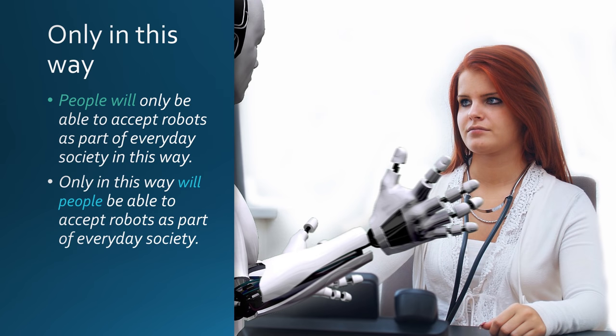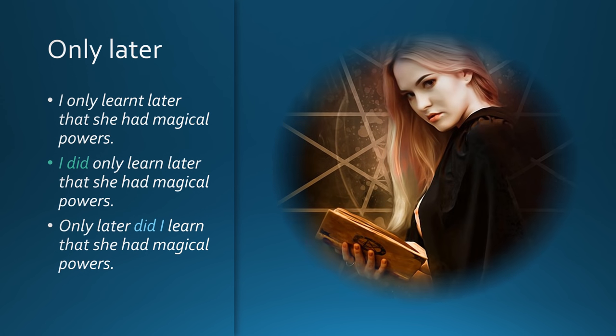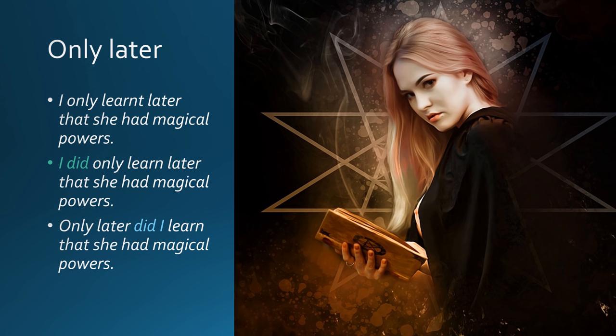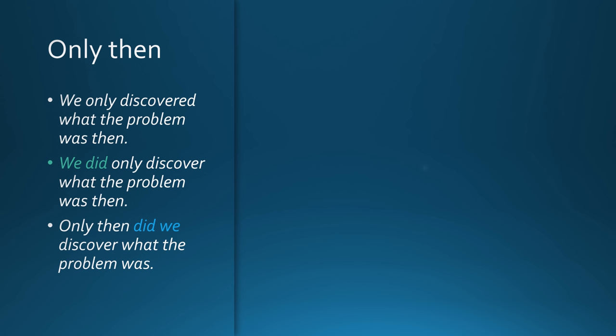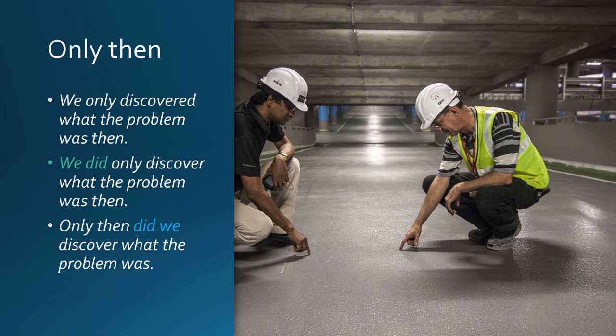Only in this way: 'People will only be able to accept robots as part of everyday society in this way' — 'Only in this way will people be able to accept robots as part of everyday society.' Only later: 'I only learnt later that she had magical powers' — 'Only later did I learn that she had magical powers.' Only then: 'We only discovered what the problem was then' — 'Only then did we discover what the problem was.'